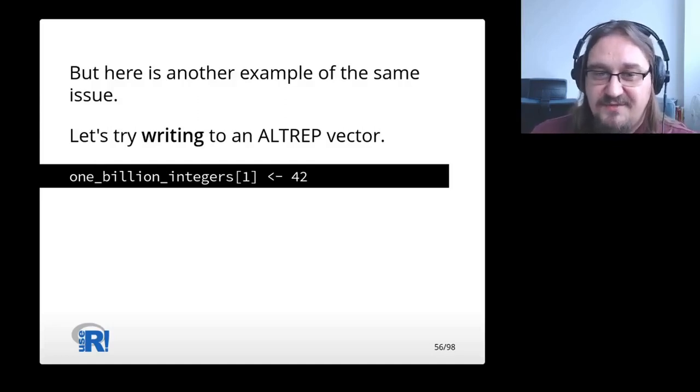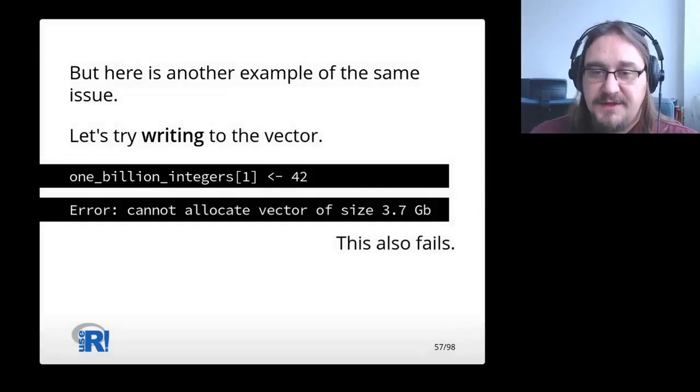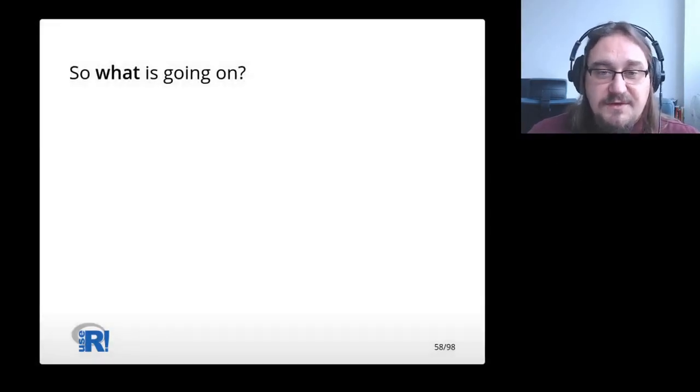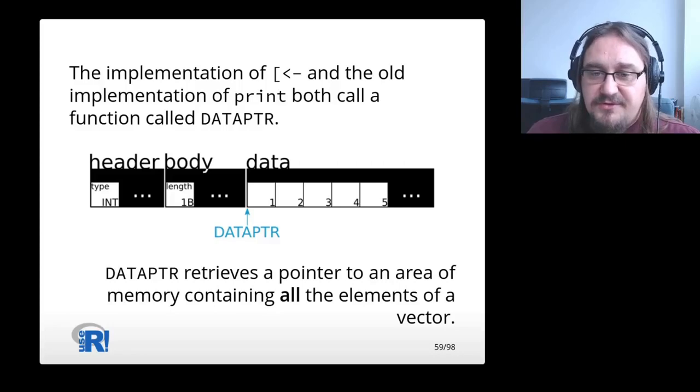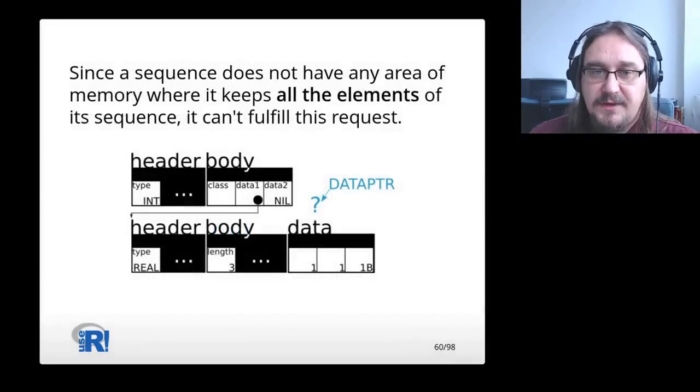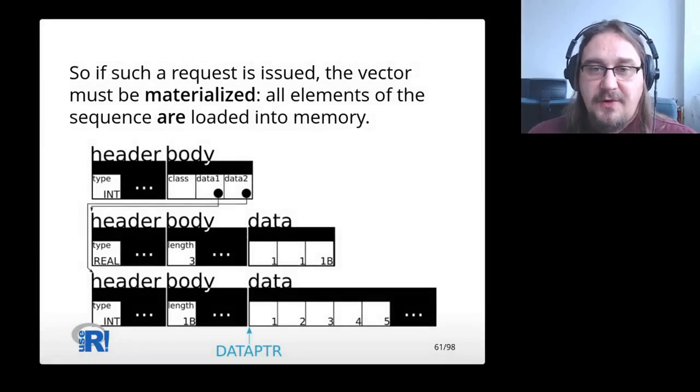So let's take a look at another example of the same issue. Let's try writing to an Altrep vector. Let's say we try to write the number 42 into the first slot in the 1 billion integers vector. This also fails. So what's going on? The implementation of subset assign and the old implementation of print both call a function called data pointer. Data pointer retrieves a pointer to an area of memory containing all the elements of a vector.